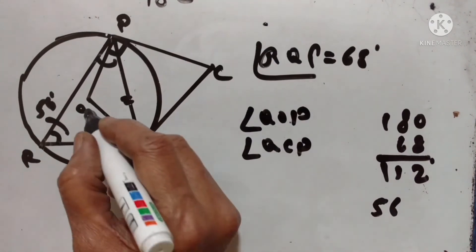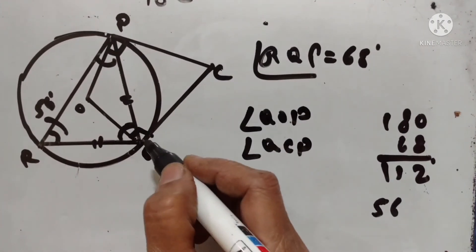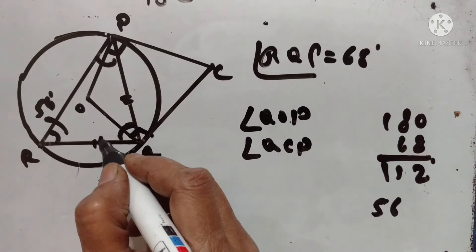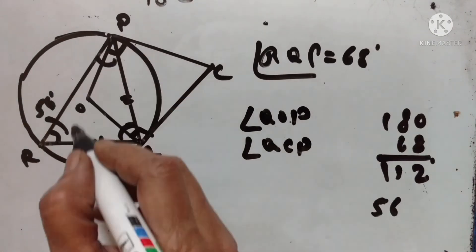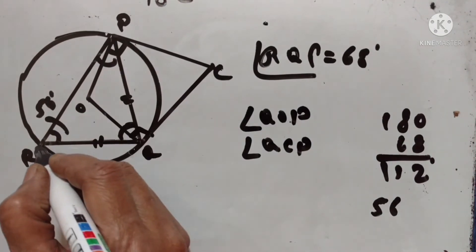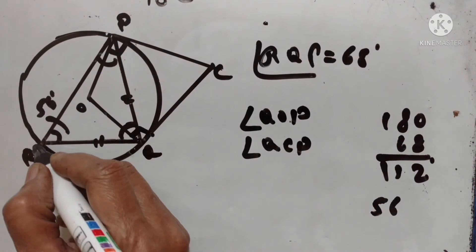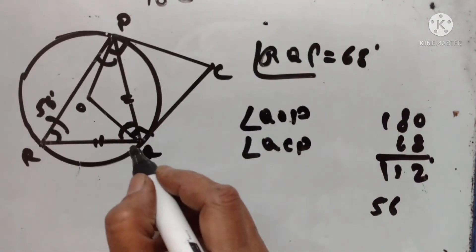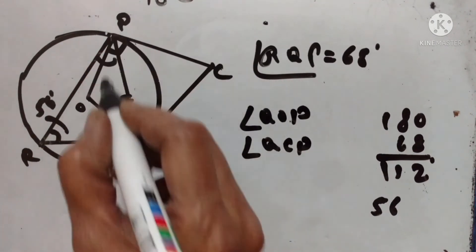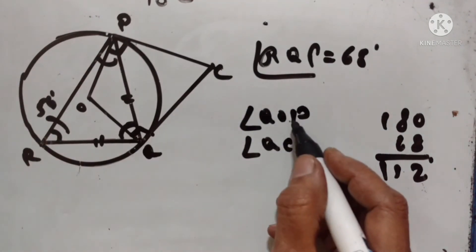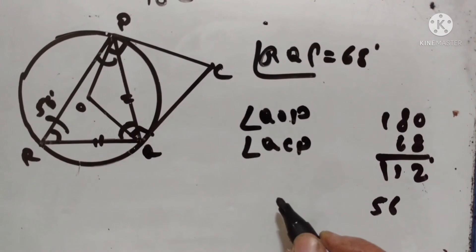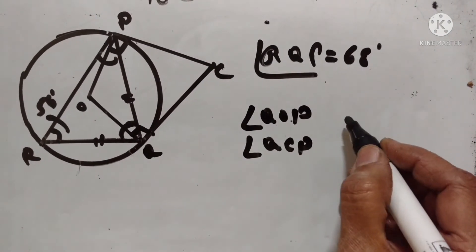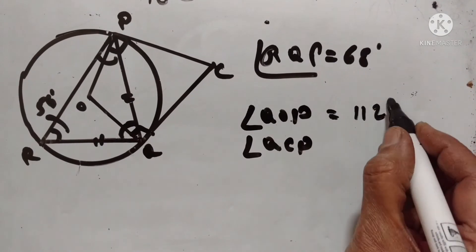Now, angle QOP is the angle subtended by arc QP at the center, and angle QRP is the angle subtended at another point on the circumference. So angle QOP equals twice angle QRP. Therefore, QOP equals 2 times 56 degrees, which equals 112 degrees.